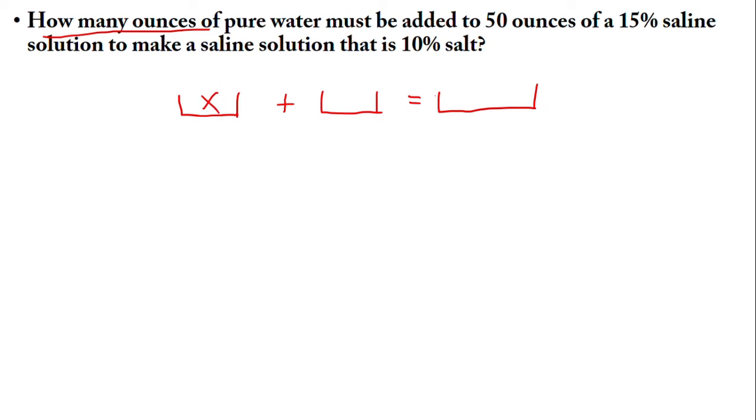It says here pure water. Pure water is zero percent solution. I repeat, pure water is zero percent solution, so you have to remember that for the rest of your life. Now we're going to add it to 50 ounces. So one volume is given, let's put it inside the box. 50 ounces of a 15% saline solution.